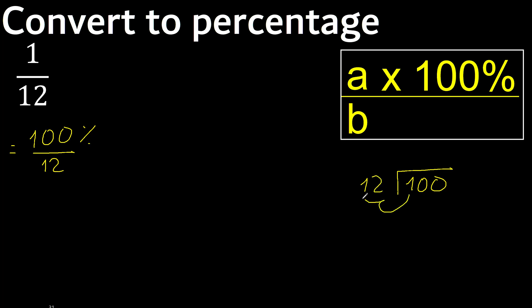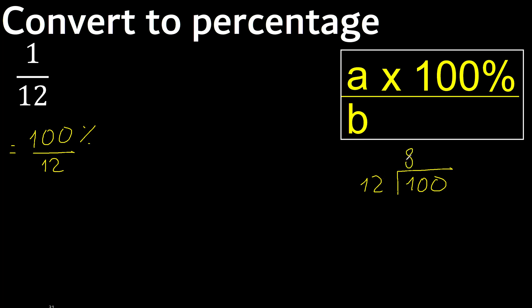1 is less, therefore next. 10 is less, therefore next. 100 is not less, therefore with 100: which number is nearest to 100 but not greater? 12 multiplied by 9 is greater. 12 multiplied by 8 is 96.